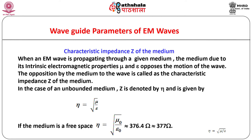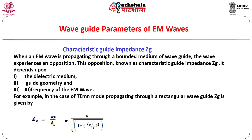When an electromagnetic wave propagates through a given medium, the medium — due to its intrinsic electromagnetic properties μ and ε — opposes the motion of the wave. This opposition is called the characteristic impedance of the medium. In an unbounded medium, it is denoted by η = √(μ/ε). For free space, η = η₀ ≈ 377 Ω. When an electromagnetic wave propagates through the bounded medium of a waveguide, the wave experiences an opposition known as characteristic guide impedance, denoted Z_g. It depends upon the dielectric medium, guide geometry and frequency. For the TE_MN mode in a rectangular waveguide, Z_g is given by the expression as shown.